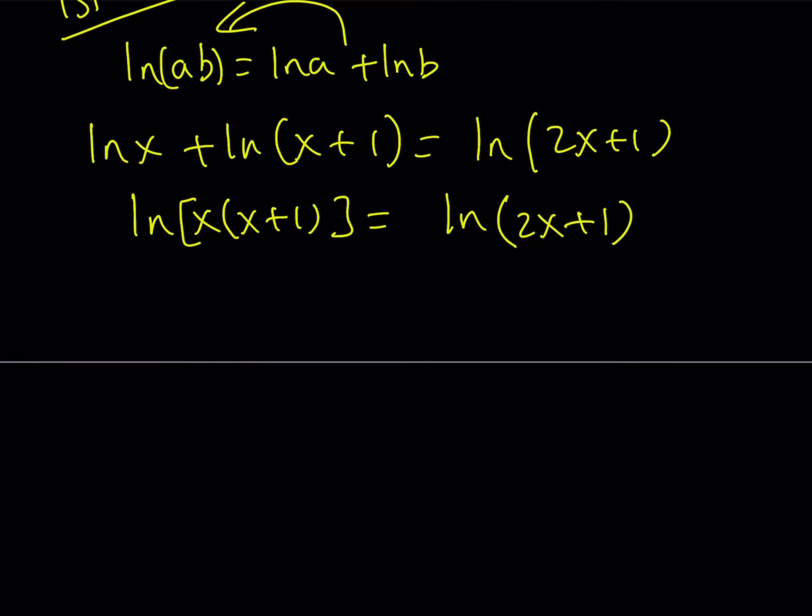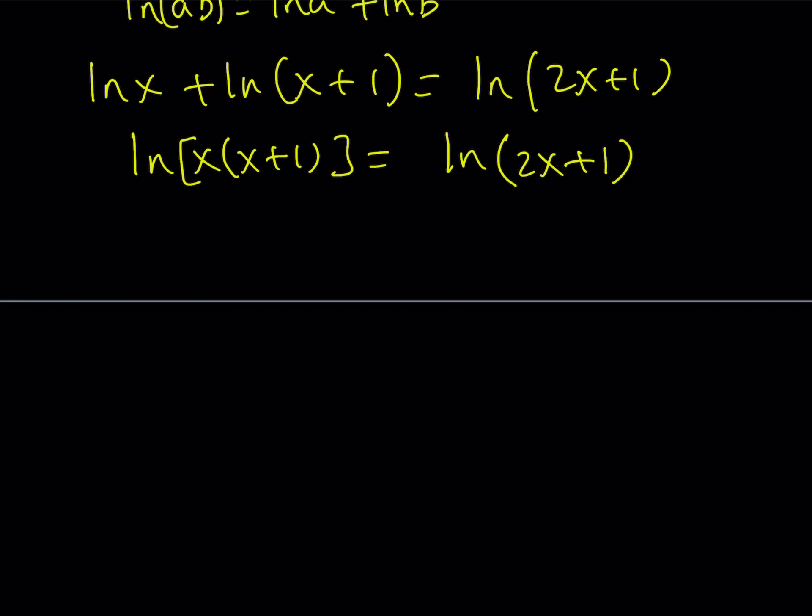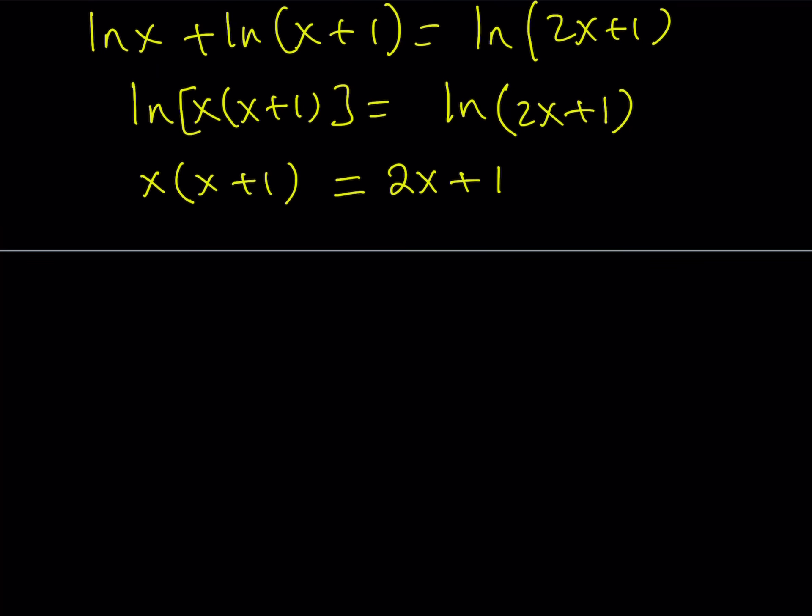Now, since we have ln on both sides, two logarithms with the same base, I can basically say that the arguments are equal. So in other words, x times x plus 1 must equal 2x plus 1. This is kind of interesting too, because we're kind of talking about two numbers whose sum equals their product, and they differ by 1. And again, we'll talk about this in more detail a little later.